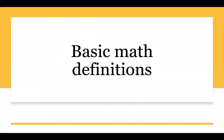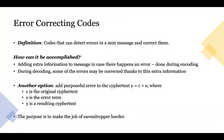So let's start with some basic math definitions. First of all, error correcting codes. These are the codes that can detect errors in some message and correct them. What we do is we add some extra information to the message during the encoding stage, and during the decoding stage, some of those errors may be corrected thanks to this extra information.